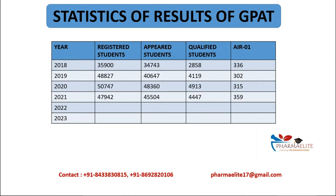The first thing I'd like to show is the statistics for GPAT results. Comparing year 2019 and 2020: in 2019, approximately 48,800 students registered for the exam, and in 2020, around 50,000 students registered. But looking at the qualified students column, only around 4,000 to 4,900 qualified. That means only 10% of students are qualifying for the exam.